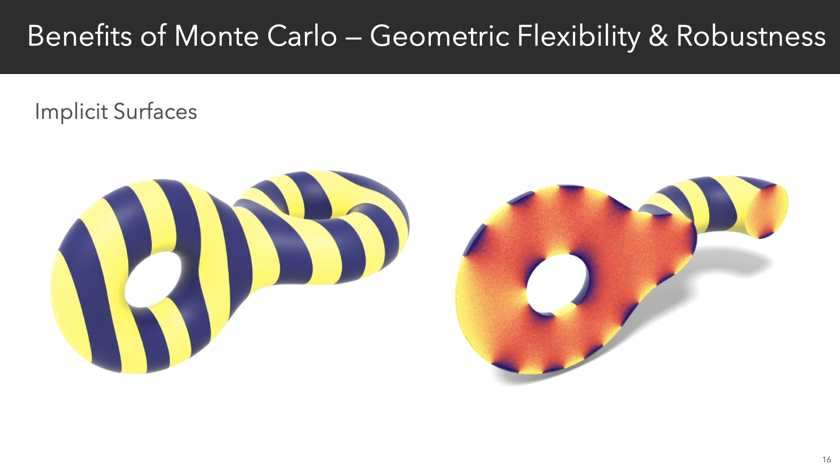We also inherit a lot of the usual benefits of Monte Carlo you find in rendering. So for instance, now all of a sudden, we can do geometry processing not just on polygonal meshes, but also on implicit surfaces.